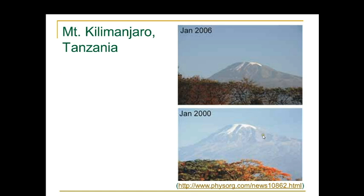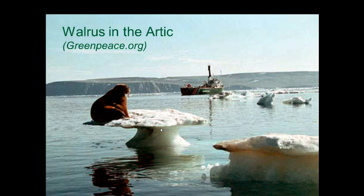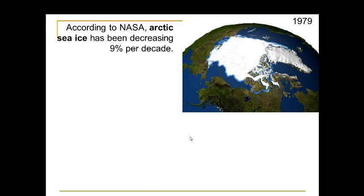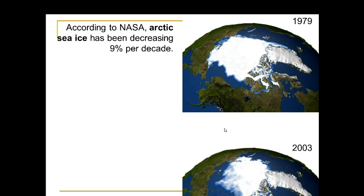Here is a picture of Mount Kilimanjaro in Tanzania. Look at the snow cap in 2000 compared to 2006 — how much it has decreased. Here is a walrus in the Arctic. According to NASA, the Arctic sea ice has been decreasing at 9% per decade, as seen comparing 1979 to 2003.